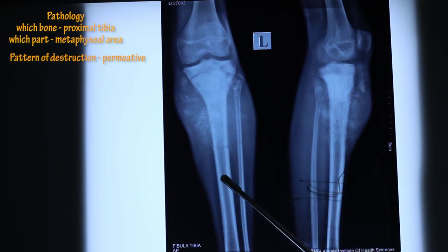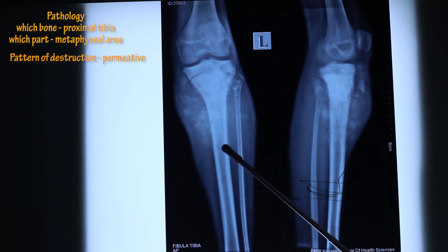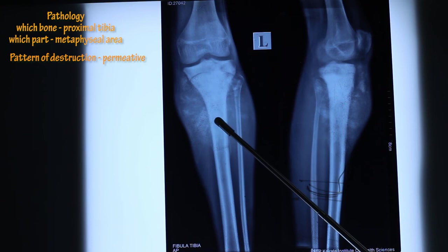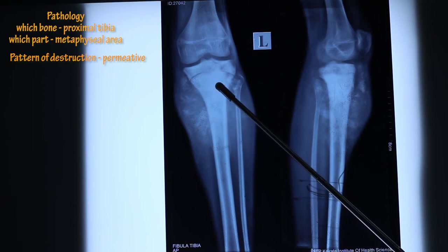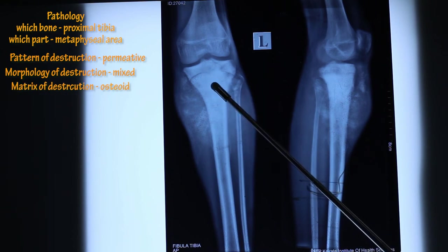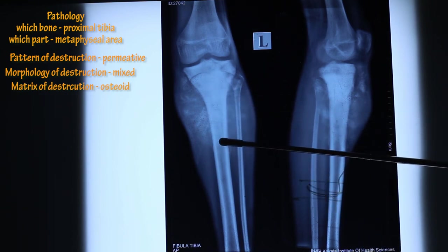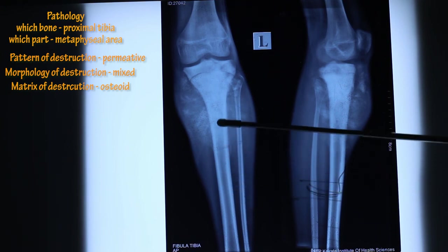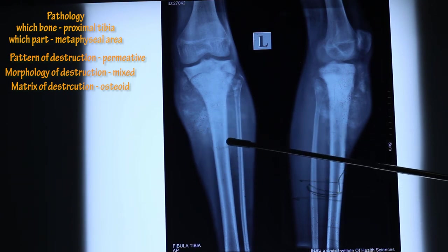You cannot easily differentiate between normal bone and pathological bone. There is only a faint area of demarcation. The morphology of the destruction is more sclerotic, meaning it is osteoblastic type. You can see an osteoblastic matrix — this area looks bony, so it can be called osteoid matrix. Since it is permeative, the zone of transition is wide. A wide zone of transition helps differentiate between a benign and a malignant tumor.